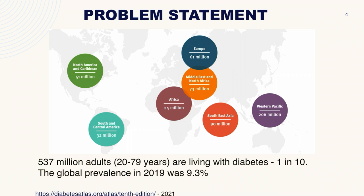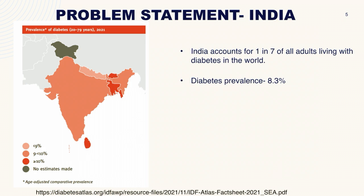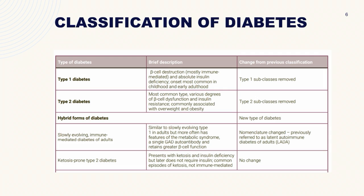Moving on to the problem statement of diabetes mellitus. There are more than half a billion people affected with diabetes mellitus. The global prevalence as per 2019 data is 9.3%, while the Indian diabetes prevalence is 8.3%, just below the worldwide prevalence.